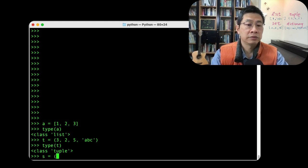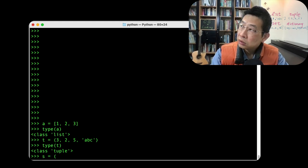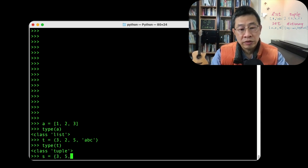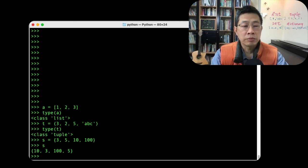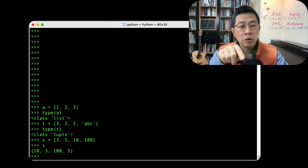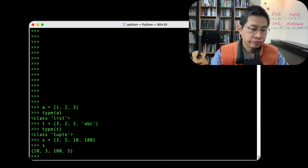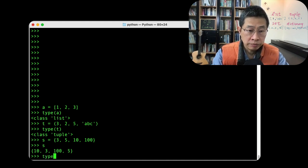Set. Oh, the curly bracket, right? Three, five, ten, maybe one hundred. And you print it out. You can see, even though the order you put it is three, five, ten, a hundred, but they have its own way to store it. And type, yes.